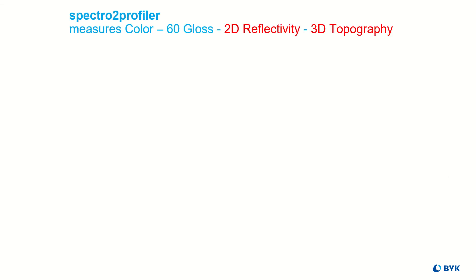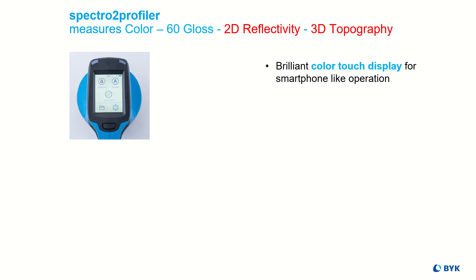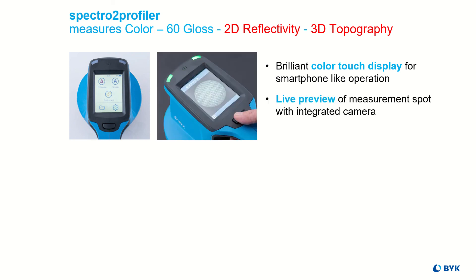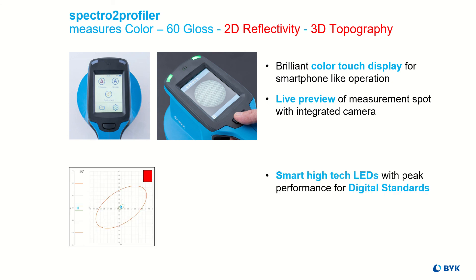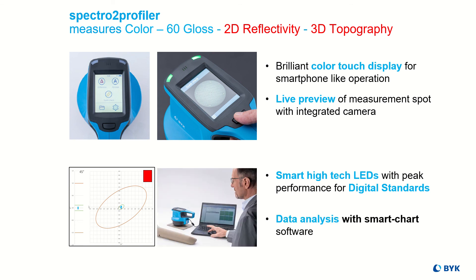To summarize, Spectro 2 Profiler measures color, 60-degree gloss, and its novelty — 2D reflectivity and 3D topography. It has a very large color touch display for ease of use. An integrated camera provides a live preview of the measurement spot. The unsurpassed technical performance due to our high-tech LED technology allows the use of digital standards. The instrument also comes with the software SmartChart for professional documentation and analysis.